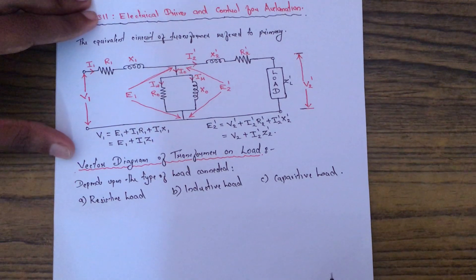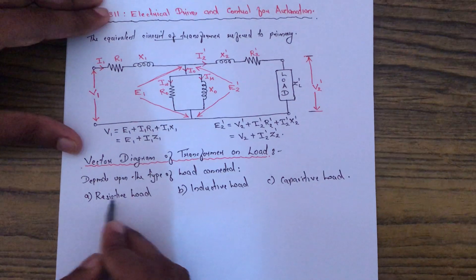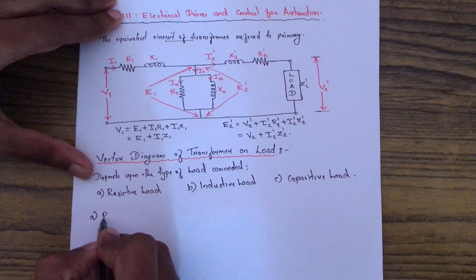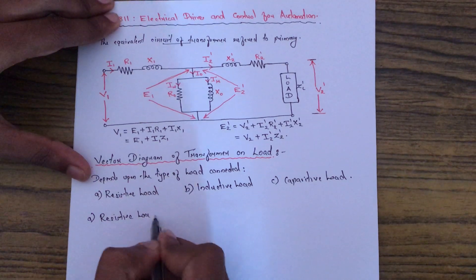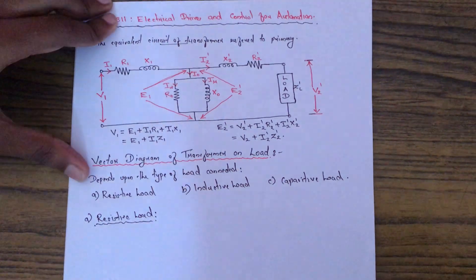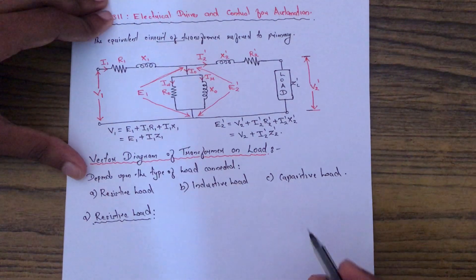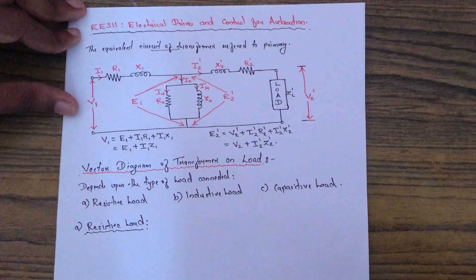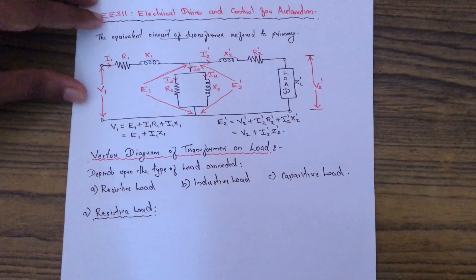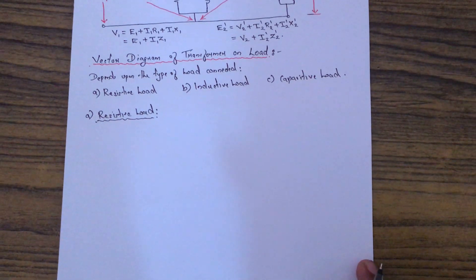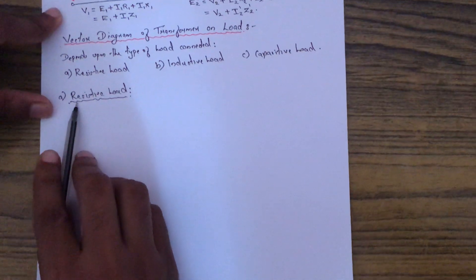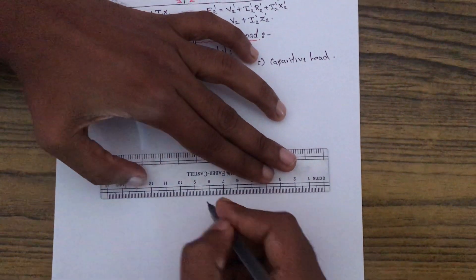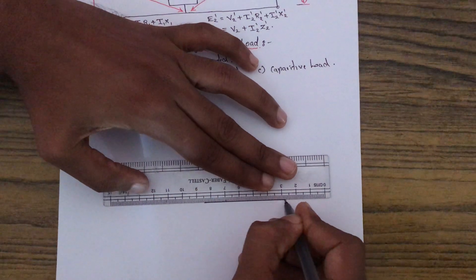The vector diagram for each load will be different. Let us draw the vector diagram for a transformer if the load connected is a resistive load. I have drawn an equivalent circuit of a transformer and written the voltage equations. We will use these voltage equations to draw the vector diagram. Here, similar to the no load vector diagram, I am taking the reference vector as the flux vector phi.